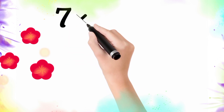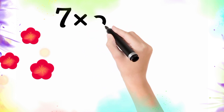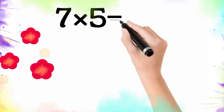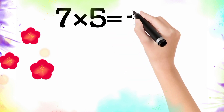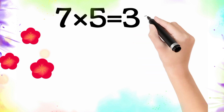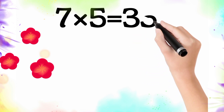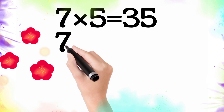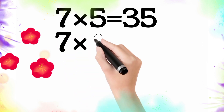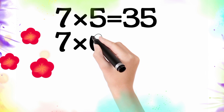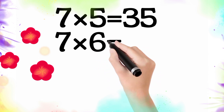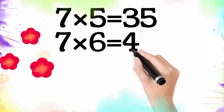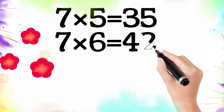Seven multiply by five is equal thirty-five. So seven five the thirty-five. Seven multiply by six is equal forty-two. So seven six the forty-two.